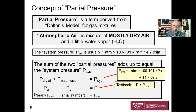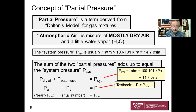The partial pressure of the water vapor is numerically a small number — just a few kPa. That means the partial pressure of the dry air is going to be nearly equal to, but not exactly equal to, the system pressure.